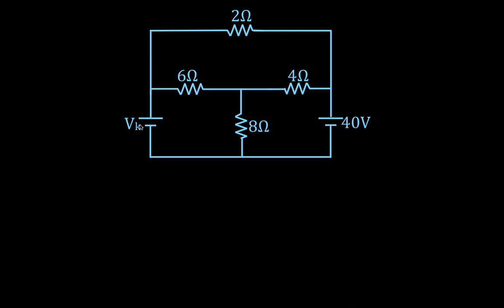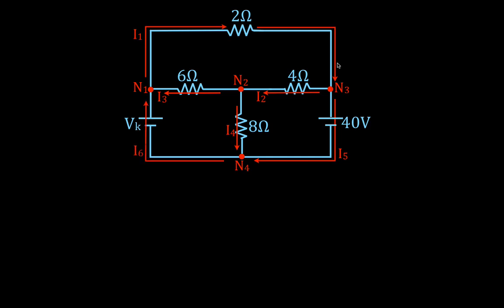The first thing we have to do is identify all of the nodes. In this circuit we have four nodes: N1, N2, N3, and N4. That's the first step. The second step is to identify the current and the direction of the currents. We have I1 flowing through the top, I2 flowing from right to left from N3 to N2, I3 flowing from N2 to N1, I4 flowing from N2 to N4, and then I5 and I6.